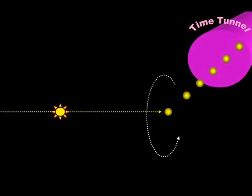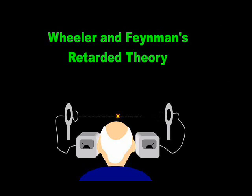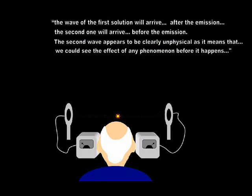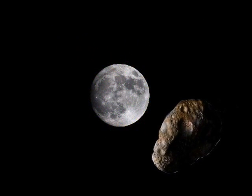Two celebrities of mathematical physics, John Wheeler and Richard Feynman, allege that particles arrive from the future. Or, alternatively, that one particle or wave in the experiment is retarded with respect to the other. The experts at the Wikipedia summarize the Wheeler-Feynman retarded theory. The wave of the first solution will arrive after the emission. The second one will arrive before the emission. The second wave appears to be clearly unphysical, as it means we can see the effect of any phenomenon before it happens.